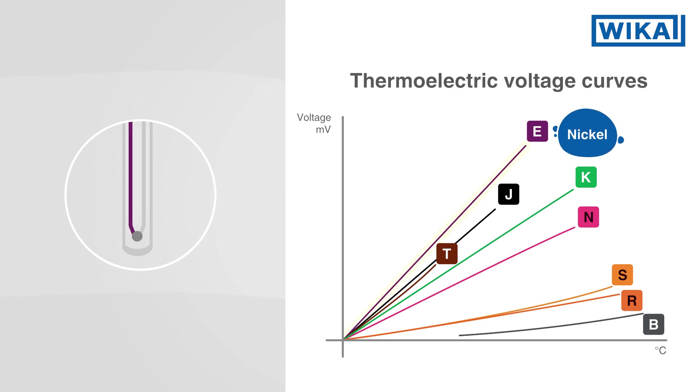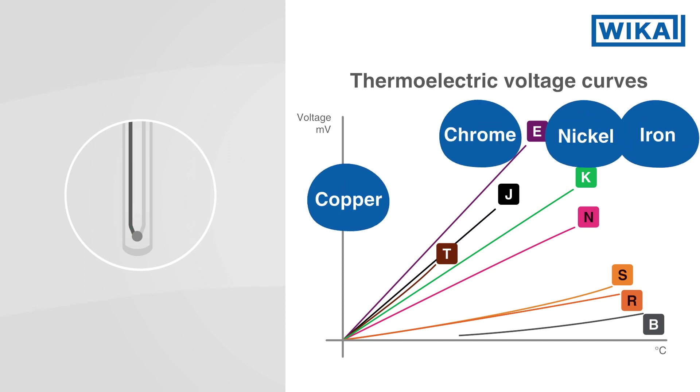The cheaper base metal pairings produce a higher thermoelectric voltage when compared to the noble metal pairings.